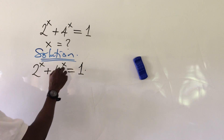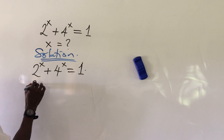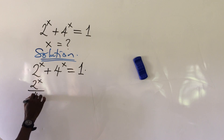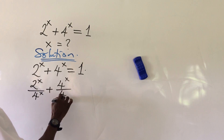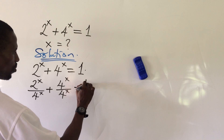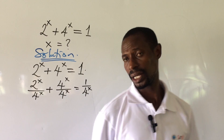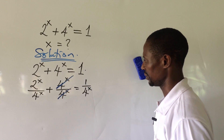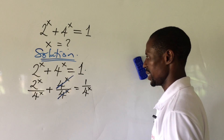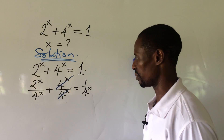Let's divide through by 4 to the power of x. So if we divide through by 4 to the power of x, we're going to have 2 to the power of x over 4 to the power of x, plus 1, equal to 1 all over 4 to the power of x. We can rewrite 2 to the power of x all over 4 to the power of x as 2 all over 4, all to the power of x.